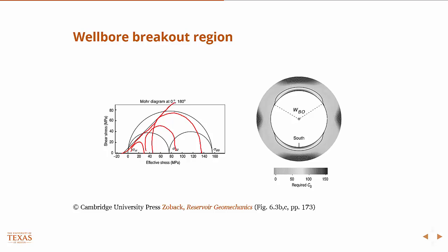Internal friction determines the slope of this line. So we go to the lab, we do some tests, we define this Mohr failure envelope, and then with that we can compute the actual stresses and plot them against our Mohr failure line. Basically, any stress state that's over here is going to be beyond the strength of the rock, and therefore cause the rock to fail.